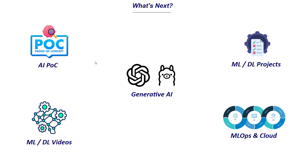So to recap: one is the AI POC, then Gen AI videos covering all the new things coming up — RAG, GraphRAG, agents, MCP and all those. Then we have projects, and I'll try to post ML and DL videos whenever possible, and also focus on MLOps, cloud, deployment and so on. I'll make a separate video about the AI POC — what's the vision and how in detail we are going to build these projects.